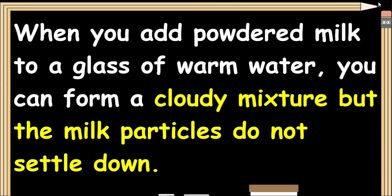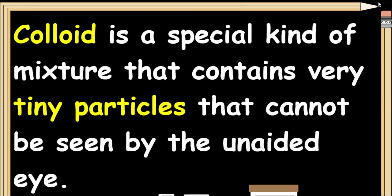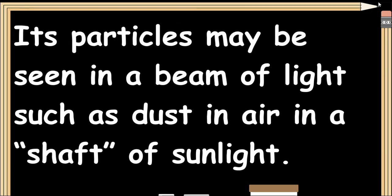When you add powdered milk to a glass of warm water, you can form a cloudy mixture but the milk particles do not settle down. The milk that you drink every day is called a colloid — a special kind of mixture that contains very tiny particles that cannot be seen by the unaided eye. Colloids are heterogeneous mixtures with intermediate particle size between a solution and a suspension. Their particles may be seen in a beam of light, such as dust in air and a shaft of sunlight.